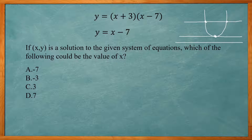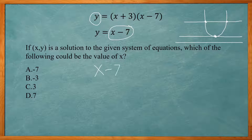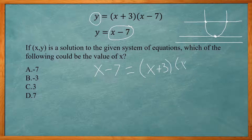Typically with this type of problem, you want to use substitution. So I'm going to replace the y in the first equation with x − 7, giving me: x − 7 equals (x + 3)(x − 7).